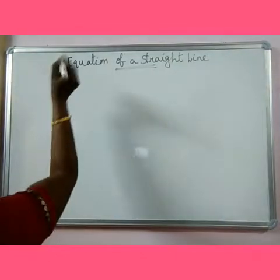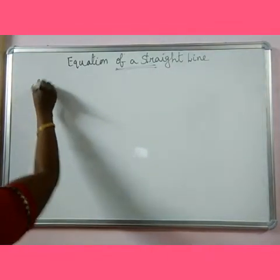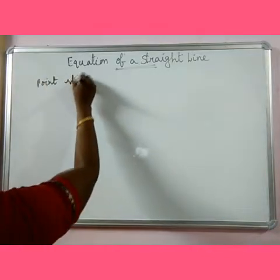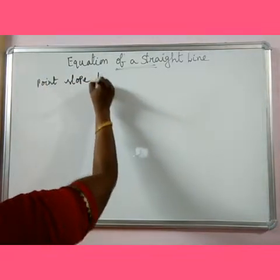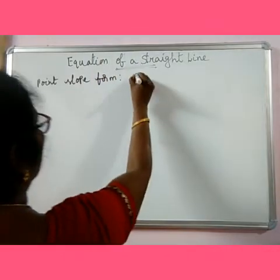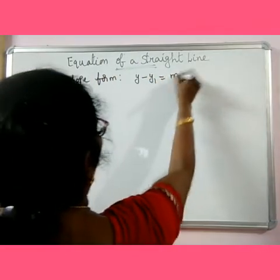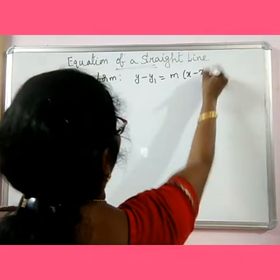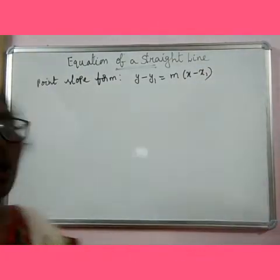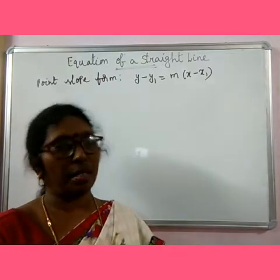You have learned that the point-slope form of finding the equation of a line is y minus y1 equal to m into x minus x1. This is the point-slope form of finding the equation of a line.